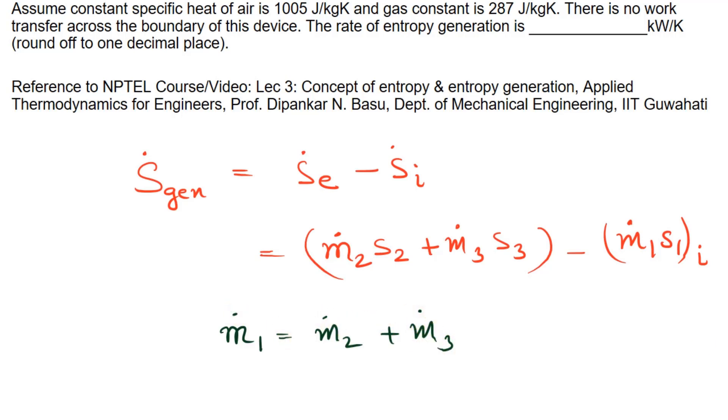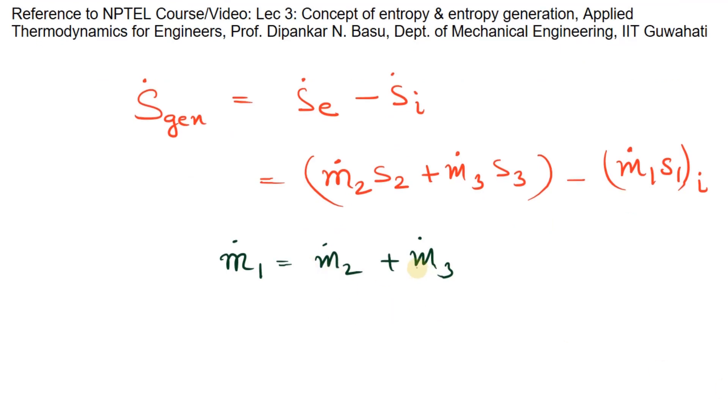Generated entropy we can write by substituting as m2_dot times (S2 minus S1) plus m3_dot times (S3 minus S1). Let this be equation number 1.